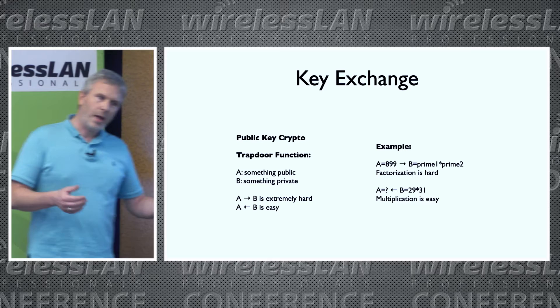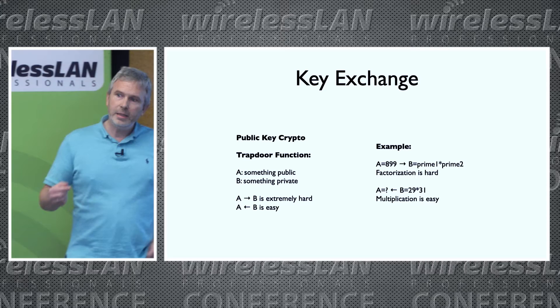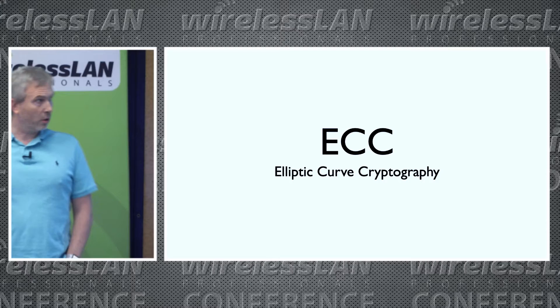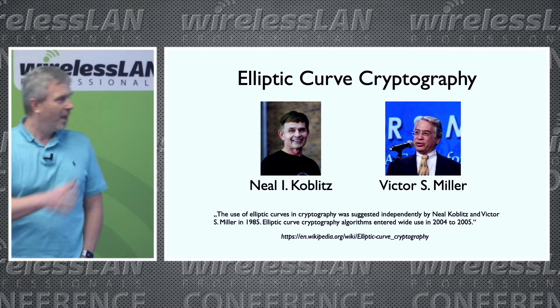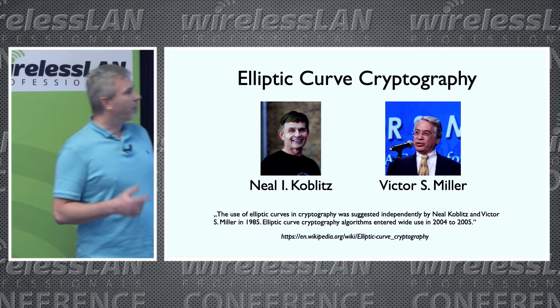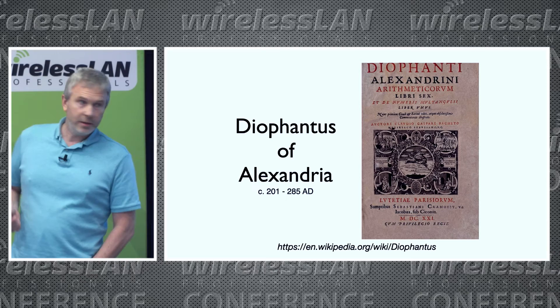We have an operation that is extremely hard to impossible in one direction, and if needed, easy in the other direction. Nowadays, we use elliptic curve cryptography for this. ECC dates back to 1985, so just eight to nine years after the original Diffie-Hellman key exchange. But working with elliptic curves is much older — Diophantus of Alexandria did it 1800 years ago.